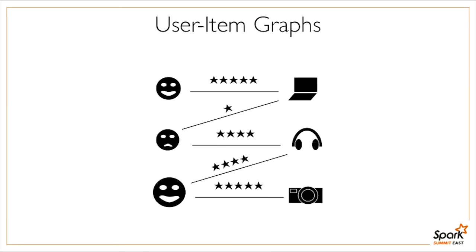But some graphs are less obvious. When users rate products on Amazon and Netflix, that creates a bipartite graph where users and products are vertices and ratings are edges. I'll show how collaborative filtering algorithms like alternating least squares (ALS) can be seen as operations on this graph.